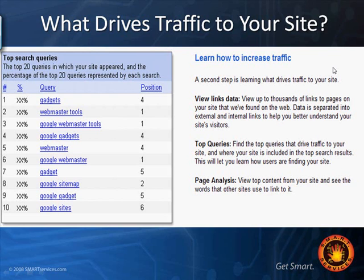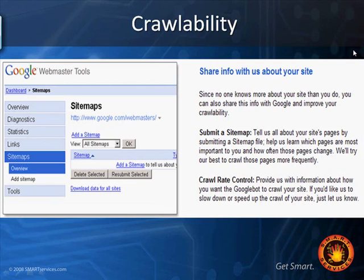You can also do page analysis to see what words other sites link to on yours. For crawlability, Google gives you better ways to make that happen. You can submit a site map — your web programmer can help make that — and submit it to Google so they know what's all there and can crawl better. The more often you make updates to your website, and the more often Google crawls and sees those updates, the more it thinks that's a fresh, constantly updating website, which keeps it higher up in search results.